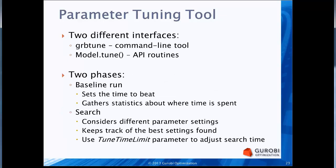So how does the tuning tool work? When it comes to invoking it, there are two options. We have a command-line tool called grbtune that's very easy to use. And in all of our APIs, we have a function or method that allows you to tune on a particular model. In the object-oriented interfaces, if you have a model object M, it's just M.tune.